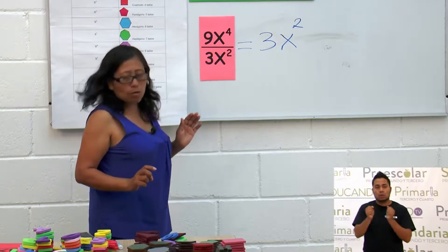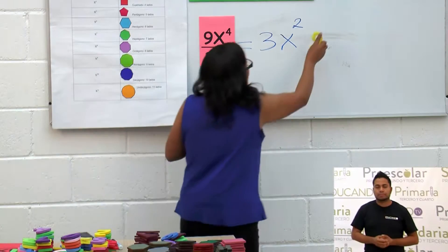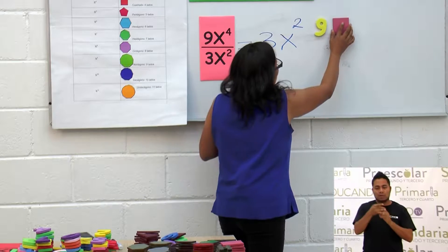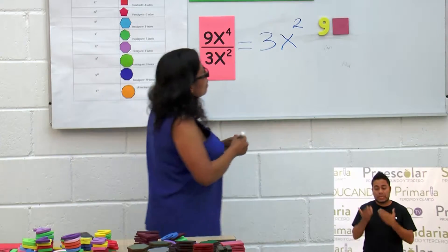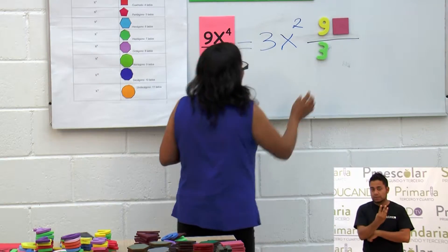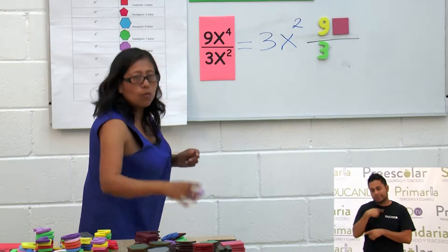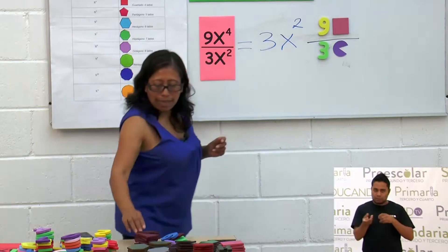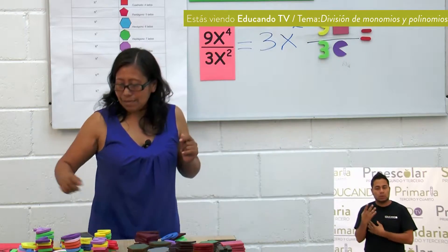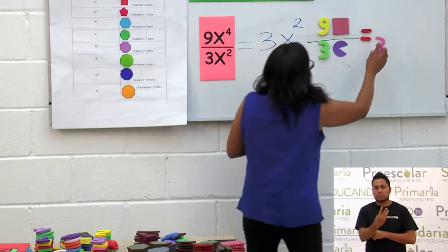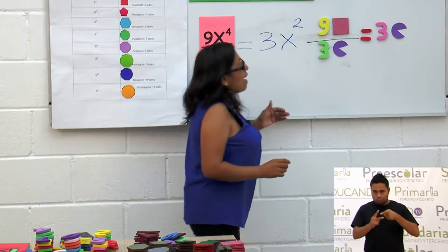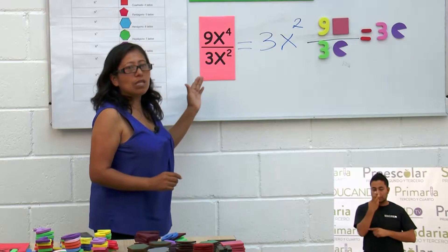Ahora lo adecuamos a la nueva metodología: ponemos el número 9. En lugar de x cuarta, vamos a poner la figura que tiene 4 lados, que es el cuadrado. 9x cuarta sobre 3x cuadrada: ponemos el número 3 y en lugar de x cuadrada el ángulo. El resultado es 9 entre 3, que es 3, y x cuadrada representada con el ángulo.